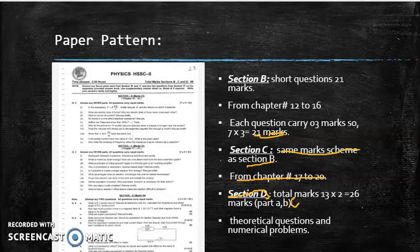Section B and C are basically short questions and they carry 21 marks each. They share the same marking scheme. In section B there are total 10 questions. You have to attempt 7 questions. Each question carries 3 marks. So total marks of section B and section C will become 21.